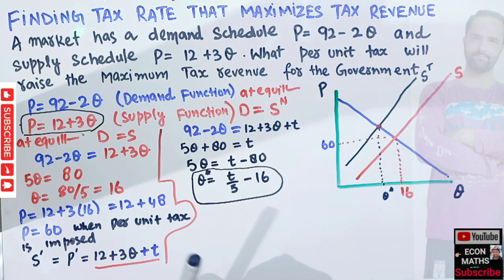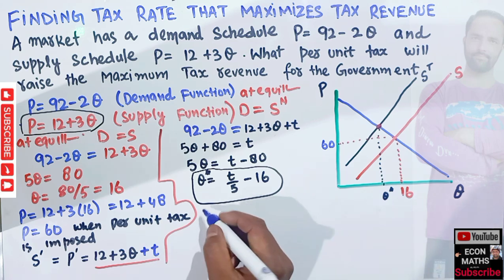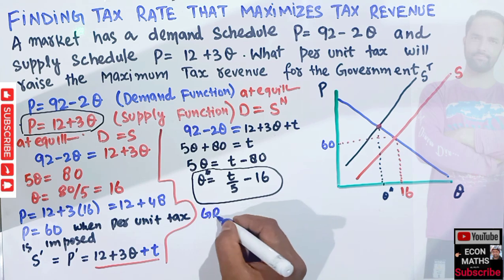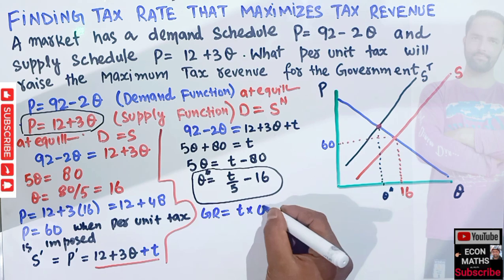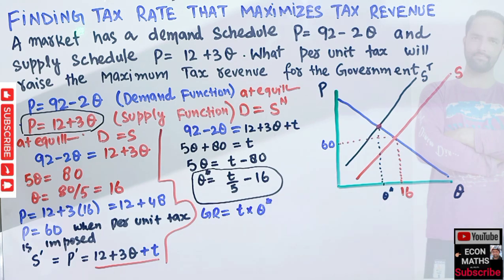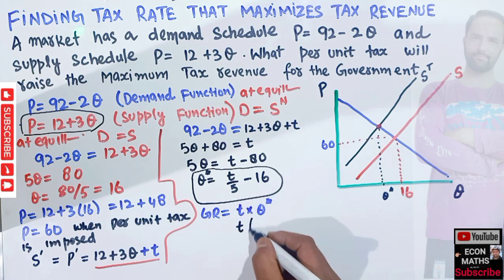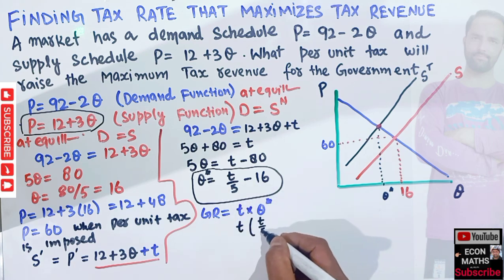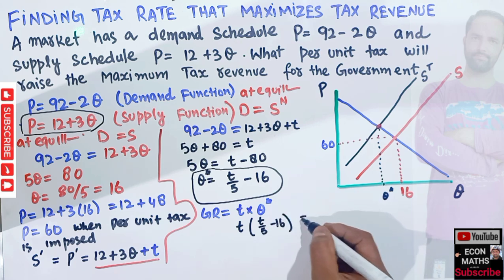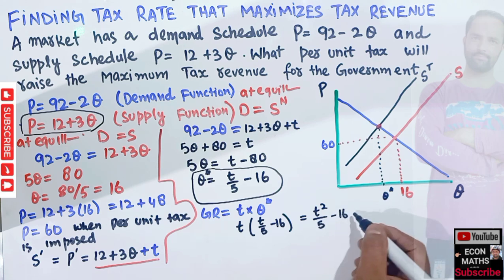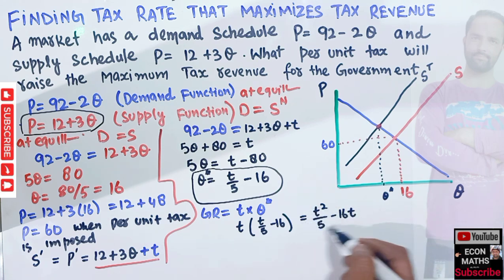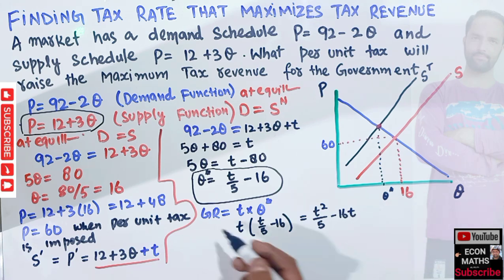The government's tax revenue equals the tax rate times the quantity transacted: GR = t × Q* = t × (t/5 - 16) = t²/5 - 16t. This is our government tax revenue function.